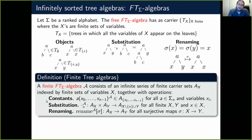We can also define the analog of substitution, which is an operation that goes from A_X and A_Y to A_{X minus x union Y}, where little x is some variable in big X. This is really just substitution in the case of the finite algebra as we have the sorts described.